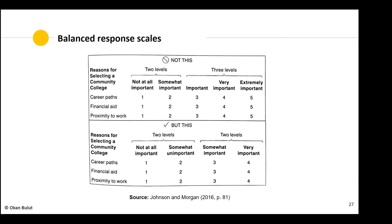Create a balanced scale with equal numbers of positive and negative response options. If you have three positive options and only two negative options, you're forcing people toward positive choices. For example, 'not at all important, somewhat important, important, very important, extremely important' has three positive options and only two negative. A balanced version would be: 'not at all important, somewhat unimportant, somewhat important, very important' — two negative and two positive, with very similar and symmetrical wording. This avoids biasing your response scale.